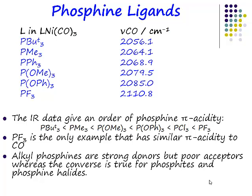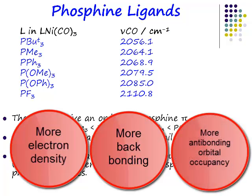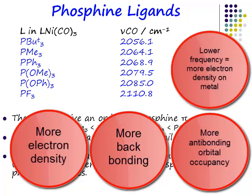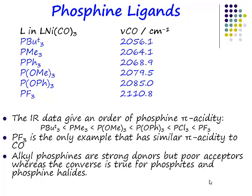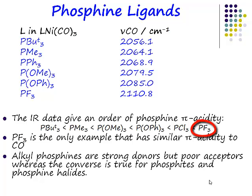This is data for phosphine complexes of nickel tricarbonyl. The more electron density on the metal, the more backbonding, and the more occupancy of the carbon-oxygen antibonding orbital — making it weaker and causing CO stretches to appear at lower frequency. So lower frequency means more electron density on the metal. The most electron-donating ligands are t-butyl phosphines, giving the lowest CO stretching frequencies. Trifluorophosphine is the most electron-withdrawing, giving the highest stretching frequency due to the least backbonding.